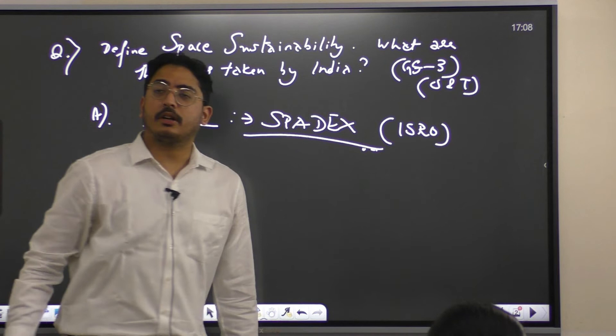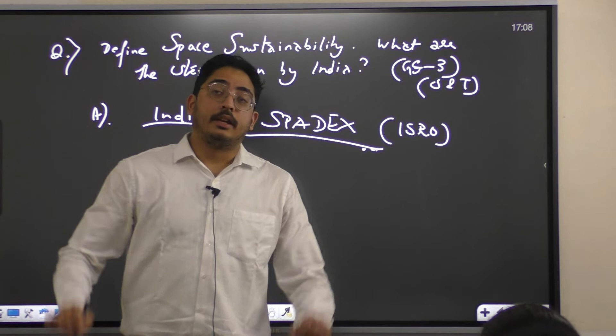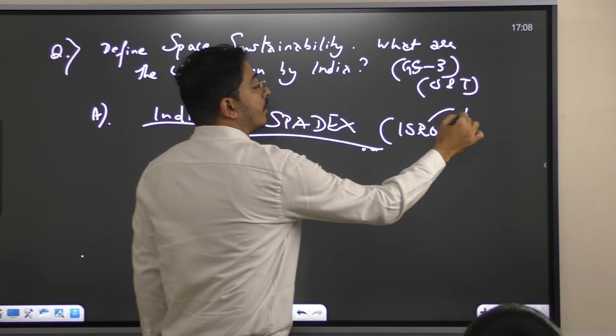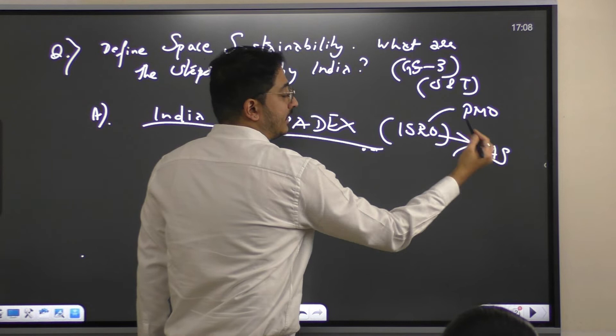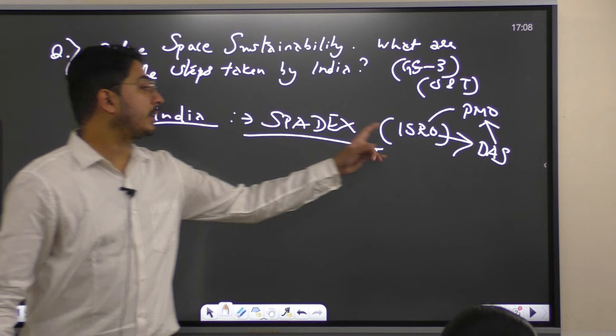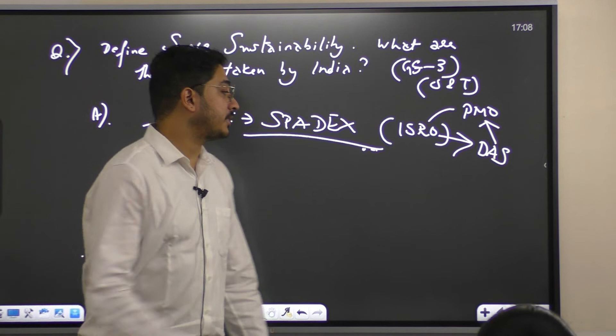ISRO is an organization under which ministry? Atomic energy? No. ISRO is not under any ministry. It is directly under PMO. Directly it is under Department of Space. It directly reports to PMO. No ministry. There is no ministry. Department of Space.